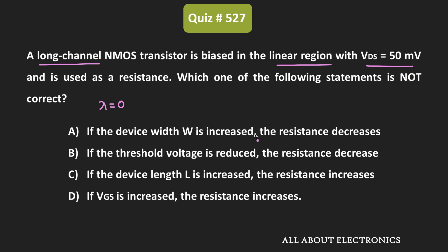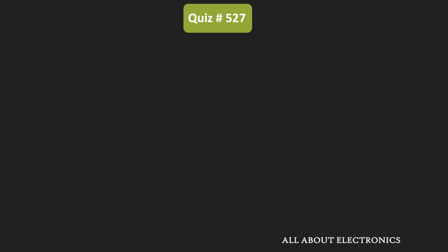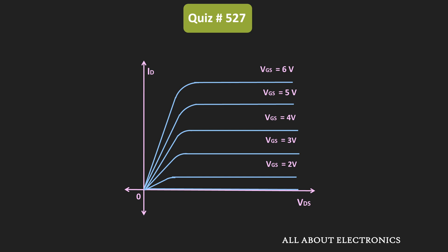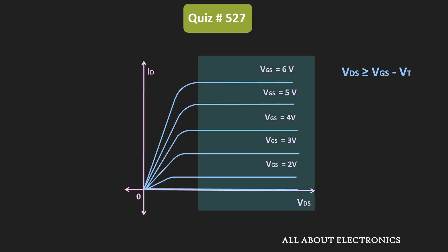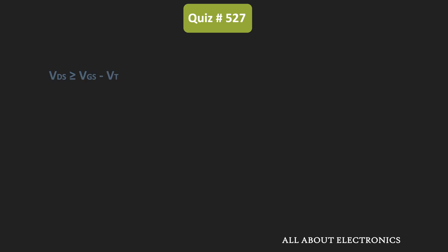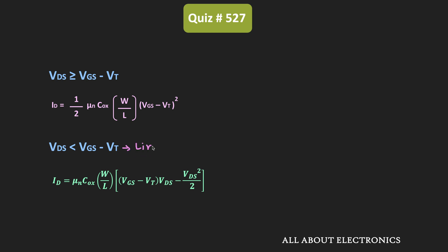For the N-channel MOSFET, we have the ID versus VDS characteristic. Whenever VDS is greater than VGS minus VT, the MOSFET operates in the saturation region, and the drain current ID is given by: (1/2) × μn × Cox × (W/L) × (VGS − VT)². Whenever VDS is less than VGS minus VT, the MOSFET operates in the linear region, and the drain current ID is given by the linear region expression.